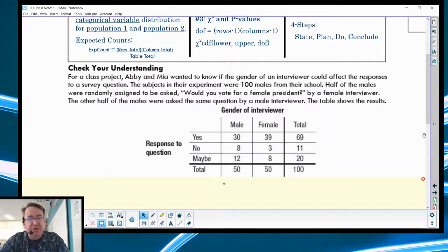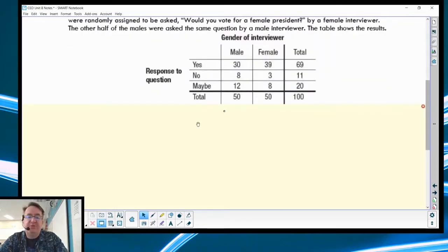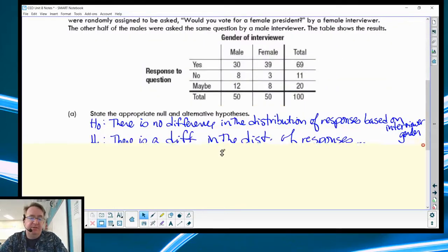I'm assuming you're ready to check your answers. So here we go. The first question is: state your hypotheses. So remember, everything's the same. We're going to say there is no difference in the distribution of responses based upon the interviewer's gender. The alternative hypothesis would be there is a difference in the distribution of responses based upon the interviewer's gender.